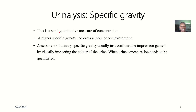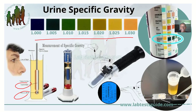Specific gravity is a semi-quantitative measurement of the concentration of urine. You're looking at the particles and solutes that will be in urine. A higher specific gravity indicates a more concentrated urine — it means the particles in the urine are too much. The specific gravity strip is graded as follows: 1.000, 1.005, 1.010, 1.015, 1.020, 1.025, 1.030.